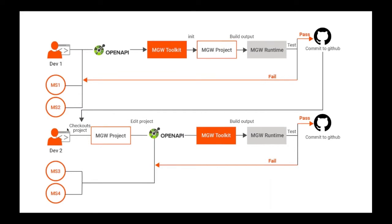Now we move to the other part. Developer 2 is another developer developing another set of microservices. They will pull this repository into their local machine and try to improve it — adding other microservices, resources, or configurations. They will change the OpenAPI definitions inside the project, then build using the micro gateway toolkit, test using the runtime, and commit those changes into GitHub.